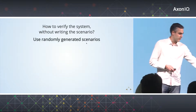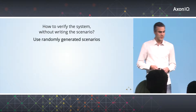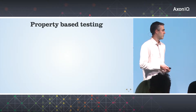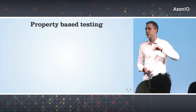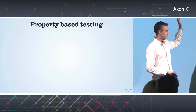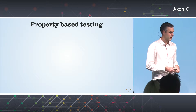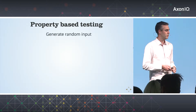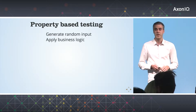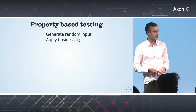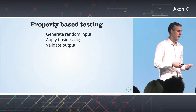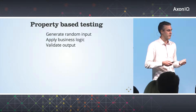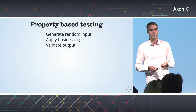So how do you verify a system without writing the scenario? That is by using a randomly generated scenario. What I'm going to talk about today is property-based testing. Who here knows what property-based testing is about? In a nutshell, it uses randomly generated input, applies that through your system, applies the business logic, and then you get some output that you get to validate. It's a different testing paradigm. So let's put that through an example.